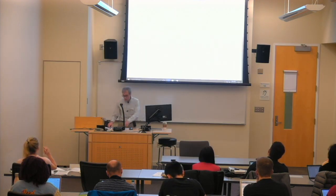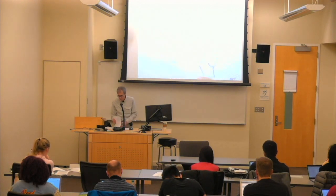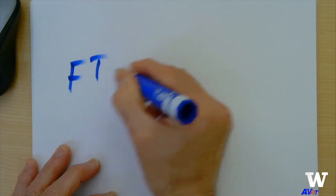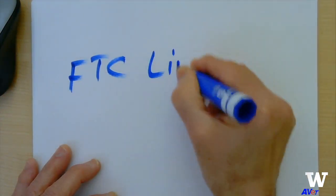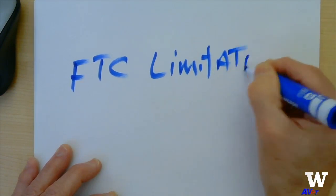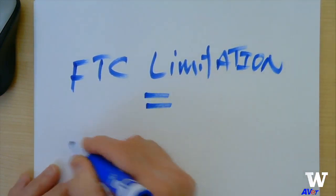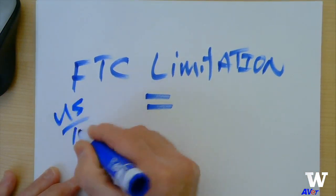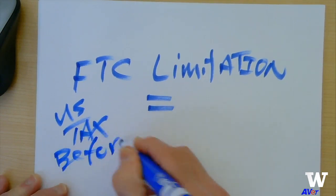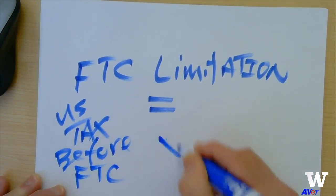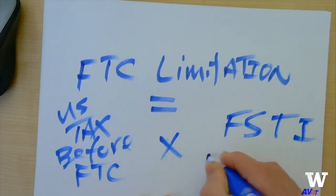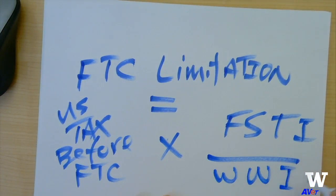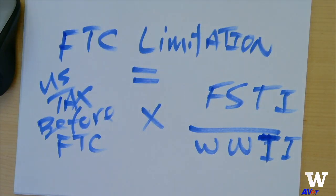What is this saying in terms of a formula? Simple formula: U.S. tax before foreign tax credit, times foreign source taxable income over worldwide taxable income.